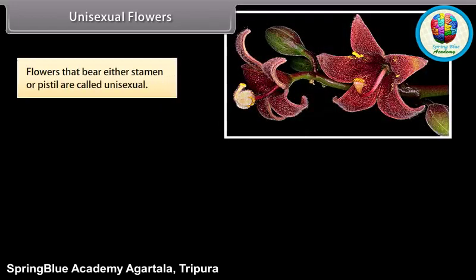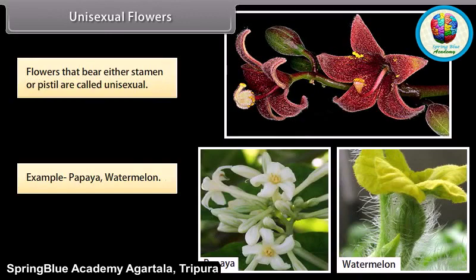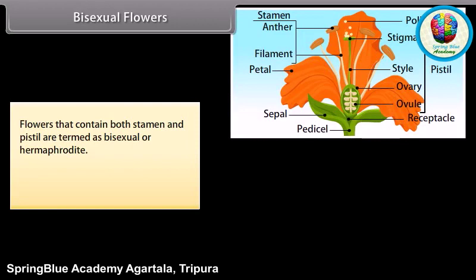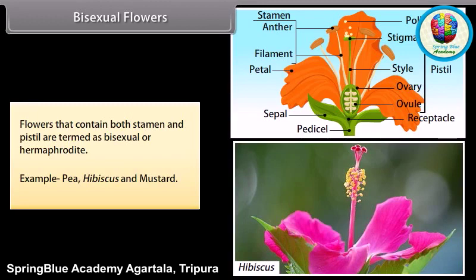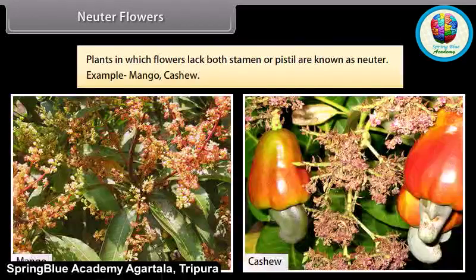Flowers that bear either stamen or pistil are called unisexual flowers. Examples include papaya and watermelon. Flowers that contain both stamen and pistil are termed bisexual or hermaphrodite flowers. Examples include pea, hibiscus, and mustard. Plants in which flowers lack both stamen and pistil are known as neuter flowers. Examples include mango and cashew.